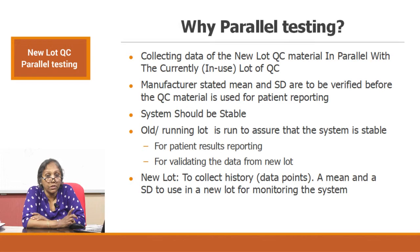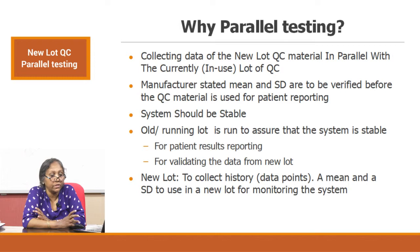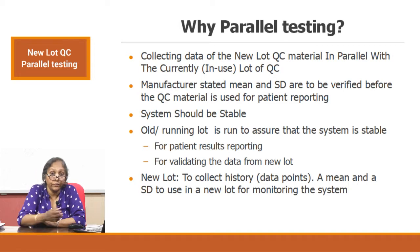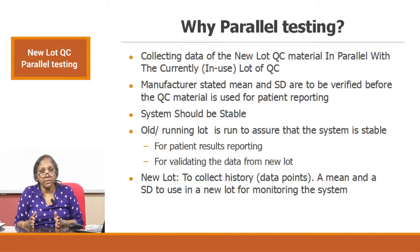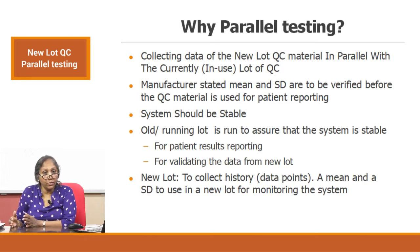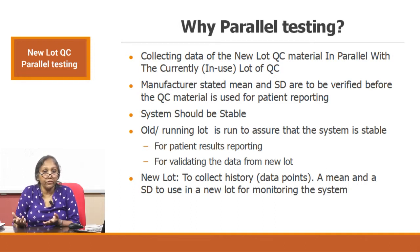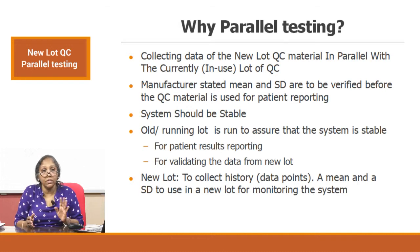You run your new QC lot to collect data points — a mean and a standard deviation — to use in the new lot for monitoring that same analytical system. Old QC lot evaluates the analytical system; the analytical system evaluates the new QC lot. Once the new QC lot has collected enough data to define a mean and standard deviation, you use that new QC lot to evaluate your analytical system when the old QC is finishing.